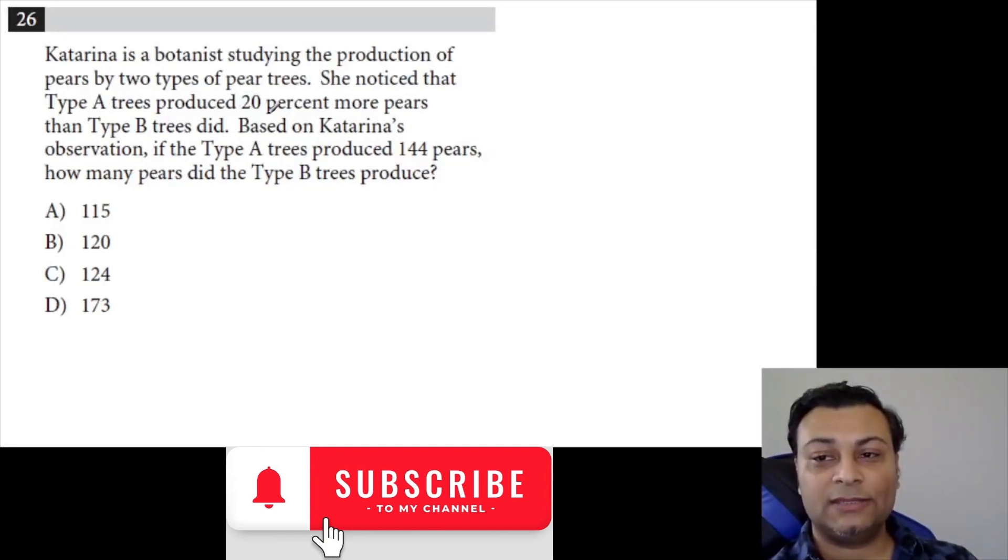So Type A is 20% more than B. So 144 is 20% more than some other number.